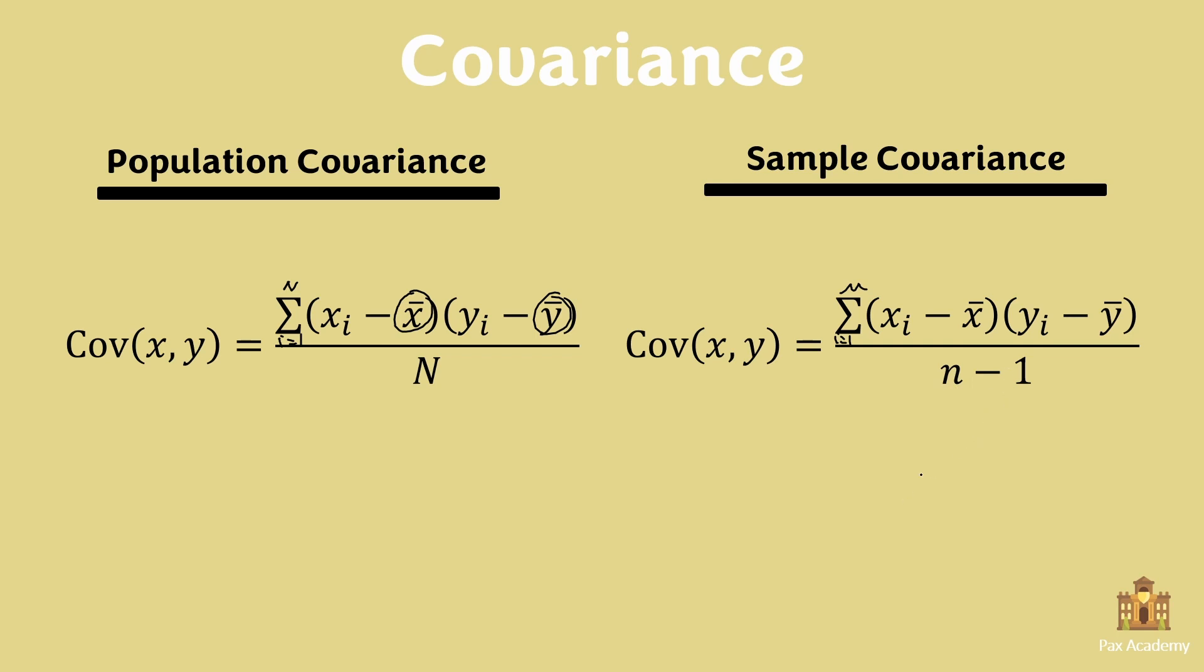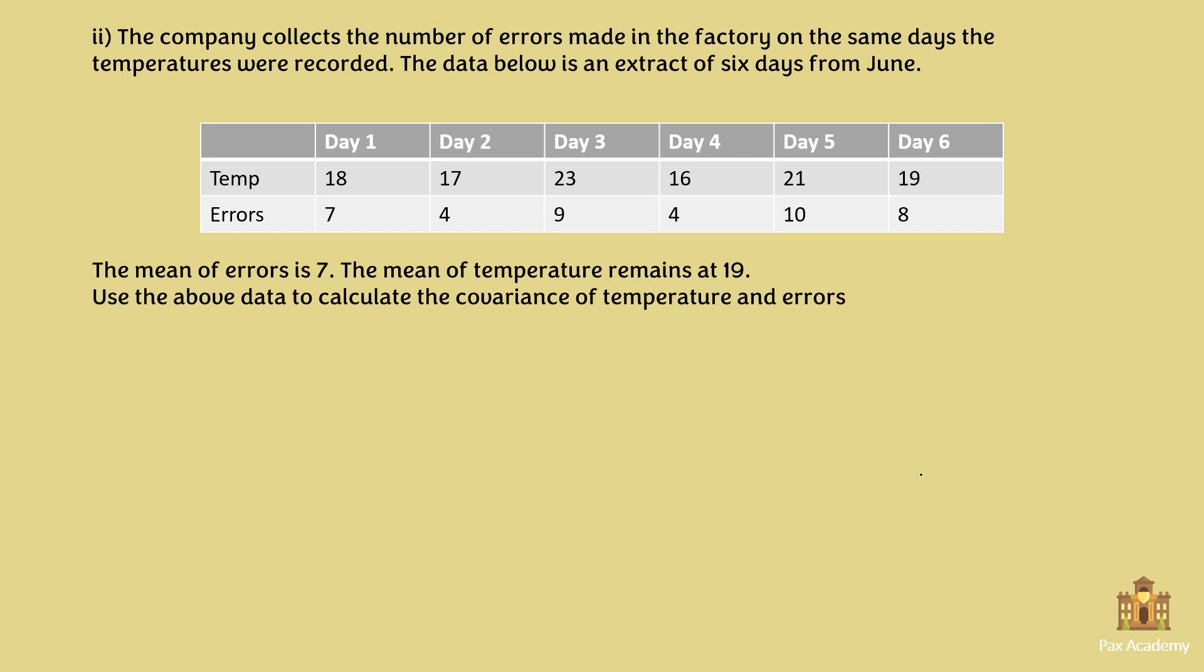So let's apply these formulas to this exercise. The exercise reads: the company collects the number of errors made in the factory on the same days the temperatures were recorded. The data below is an extract of six days from June. The mean of errors is 7 and the mean of temperature remains at 19. Use the above data to calculate the covariance of temperature and errors.